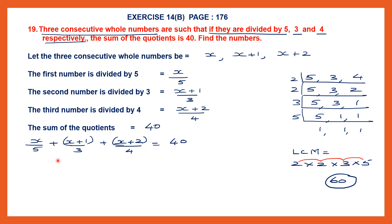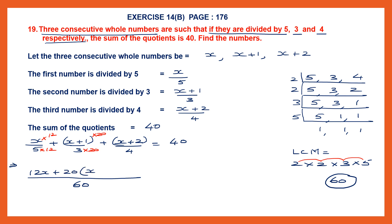We're going to use 60 as the common denominator. Now 5 into 12 is 60, so multiply x by 12 giving 12x. For the second fraction, 3 into 20 is 60, so multiply (x plus 1) by 20 giving 20 into (x plus 1). For the third, 4 into 15 is 60, so multiply (x plus 2) by 15 giving 15 into (x plus 2). All over 60 equals 40.